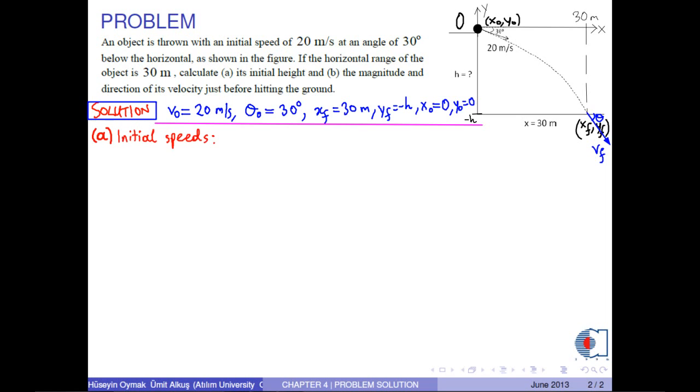In part A, first of all, let us find the initial speed in the x and y axis. The x component of the initial velocity is vx0 equals v0 times cosine theta0. With the corresponding numerical values, we find it as 17.321 meters per second.